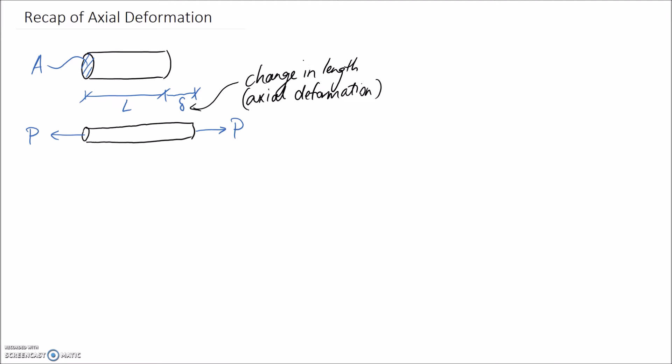I'm going to derive the main equation for axial deformation, which is that delta is equal to PL on AE. To get this, I'm going to start with the equation for Young's modulus, which is equal to the change in stress divided by the change in strain through the linear region of the stress-strain curve.